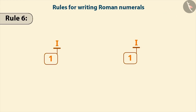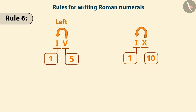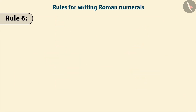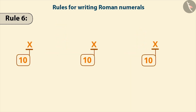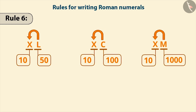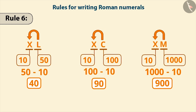The symbol of 1 can only be written to the left of 5 or 10 — that is, it can only be subtracted from these numbers. Similarly, the symbol of 10 can only be written to the left of 50, 100 or 1000 — that is, it can only be subtracted from these numbers.